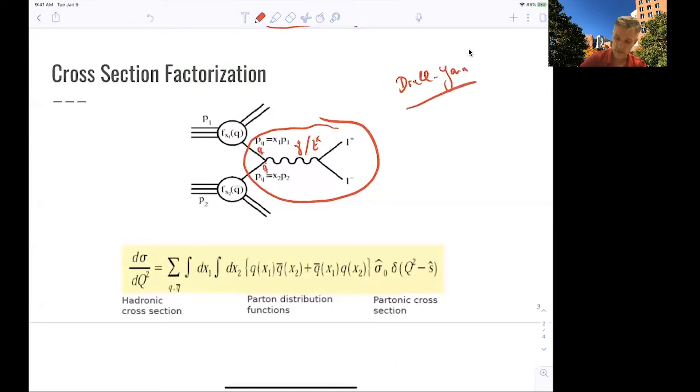and we're looking at the decay either of the photon, so a virtual photon, or the z-boson into a pair of leptons, electrons or muons or taus.